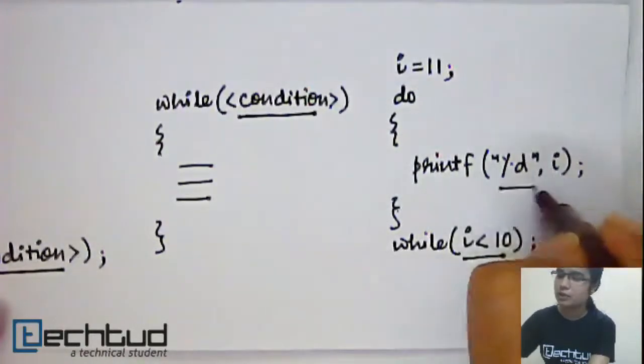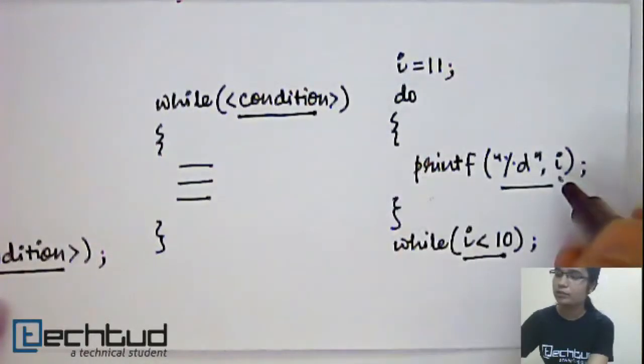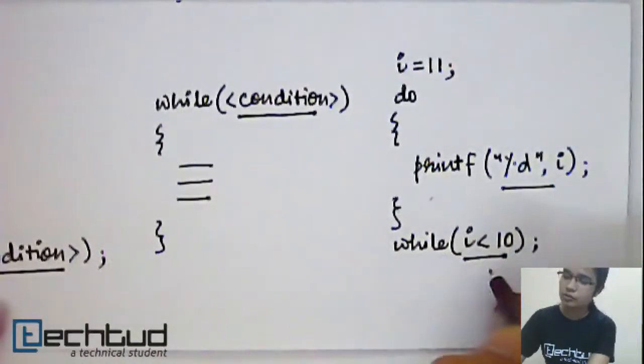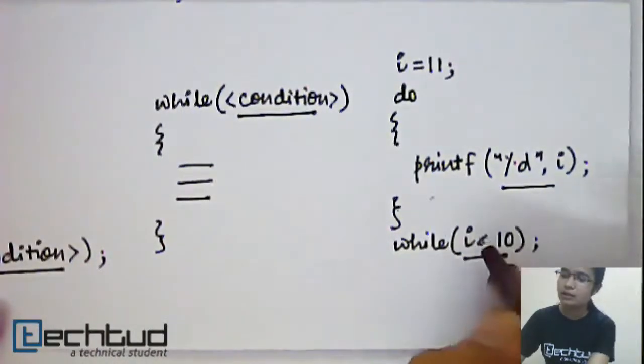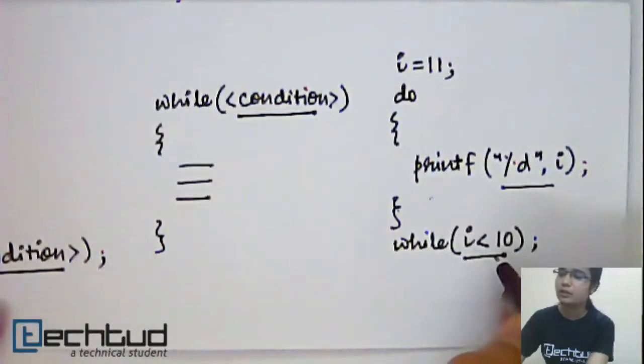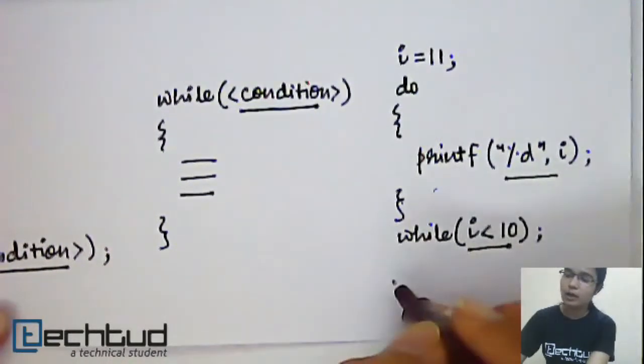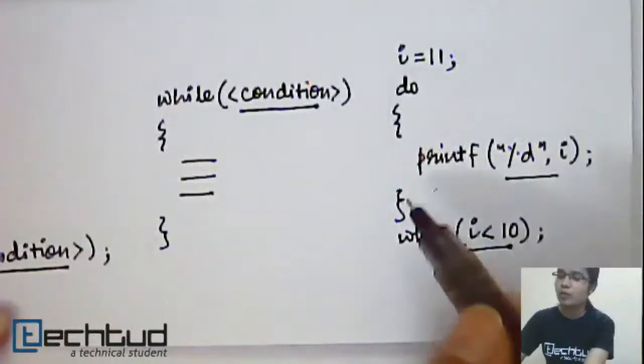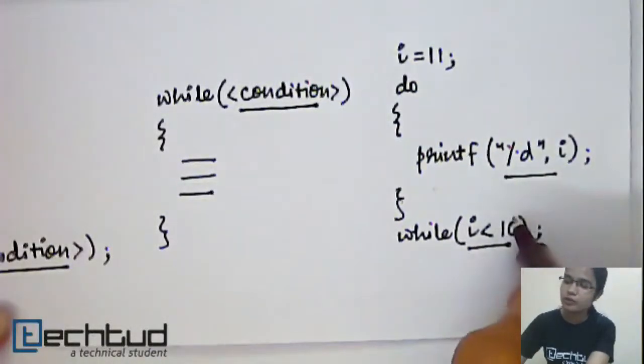But here in this case, it will first execute this statement. The value of i will be printed. Then the control will come here and it will see that the condition I have written is false for the particular value of i, and the control will come out of the loop.